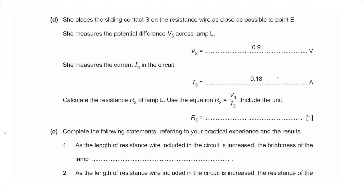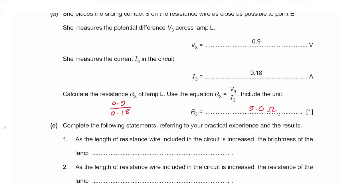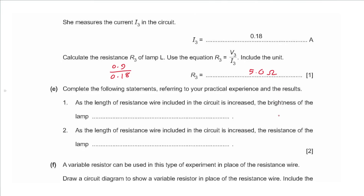Part D says she places the sliding contact as close as possible to point E. The potential difference V3 is 0.9 volts and the current is 0.18 A. We calculate the resistance by dividing 0.9 by 0.18, giving an answer of 5.0 ohms.